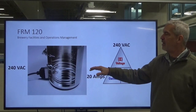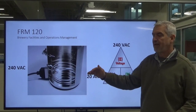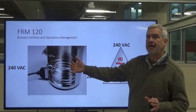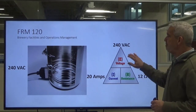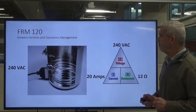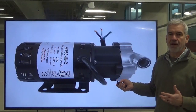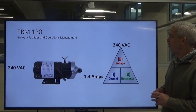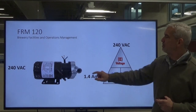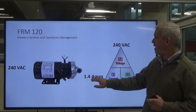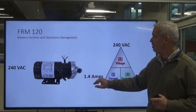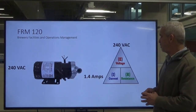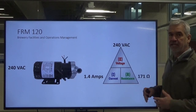The heat will make that vary a little bit because heat impacts resistance, so it could vary. But mathematically, this is what it should be. And of course, we use pumps for transferring our liquids. In this example, if we have 240 volts applied to our pump and it pulls 1.4 amps, we can expect the windings in this motor to have a resistance value of about 17 ohms.